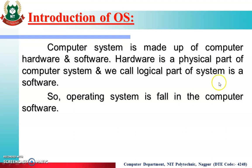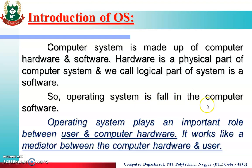Introduction to Operating System. We know that a computer system is made up of computer hardware and software. Hardware is called the physical part of the computer system, and the logical part is called software. If I talk about the operating system, the operating system is software in the computer system. The operating system plays an important role between the user and computer hardware — it works like a mediator between computer hardware and user.